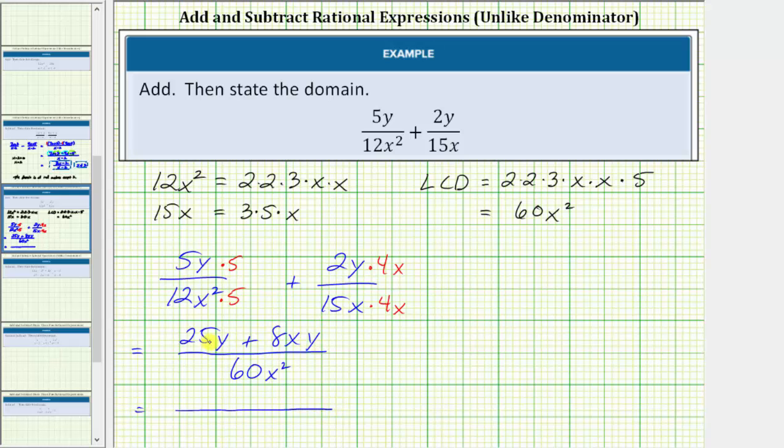Looking at the numerator, notice how both terms contain a factor of y. We factor out y, we're left with 25 plus 8x. We'll leave the denominator as 60x squared. Notice how in factored form, there are no common factors between the numerator and denominator, and therefore we can express the rational expression in either of these two forms.